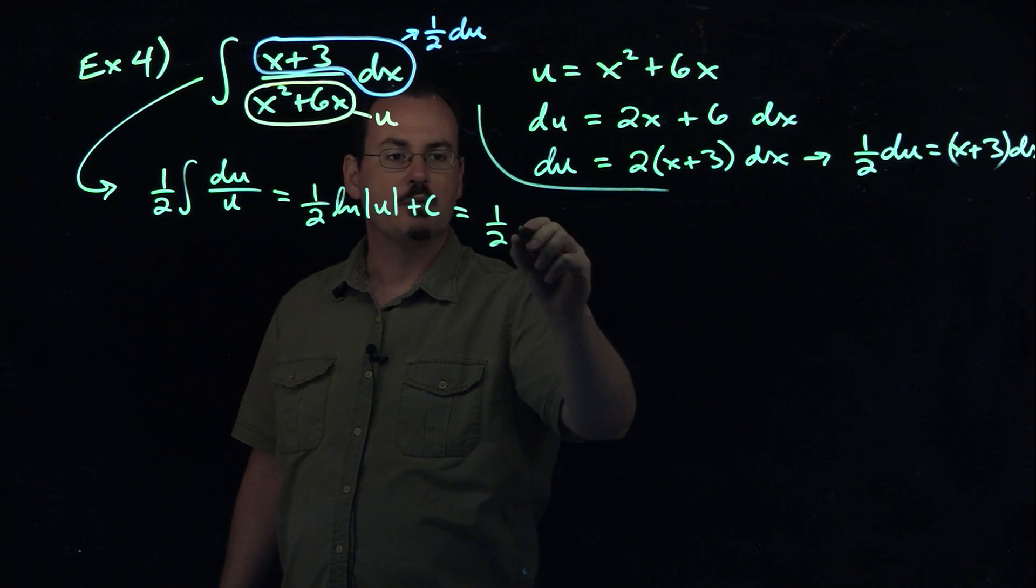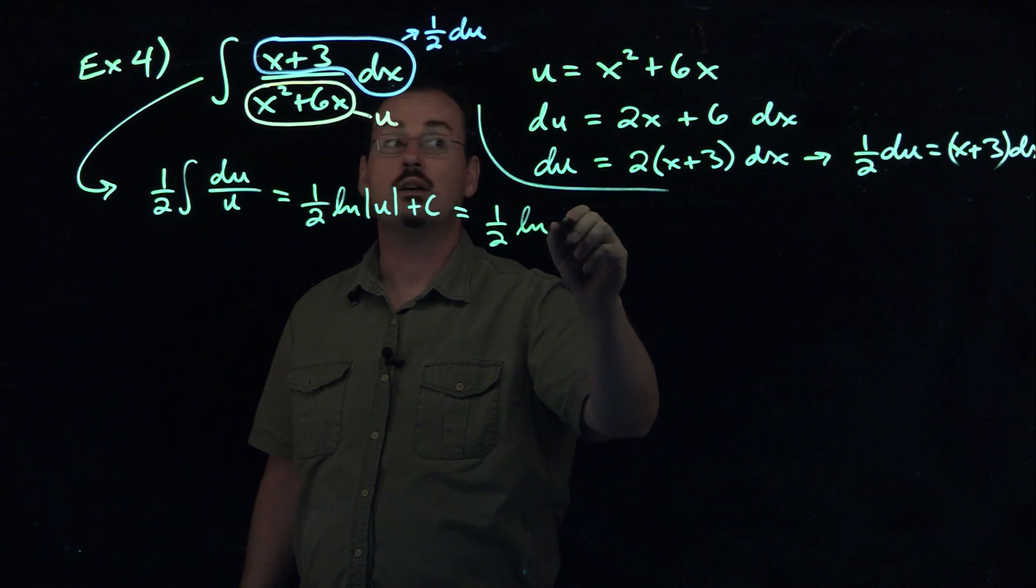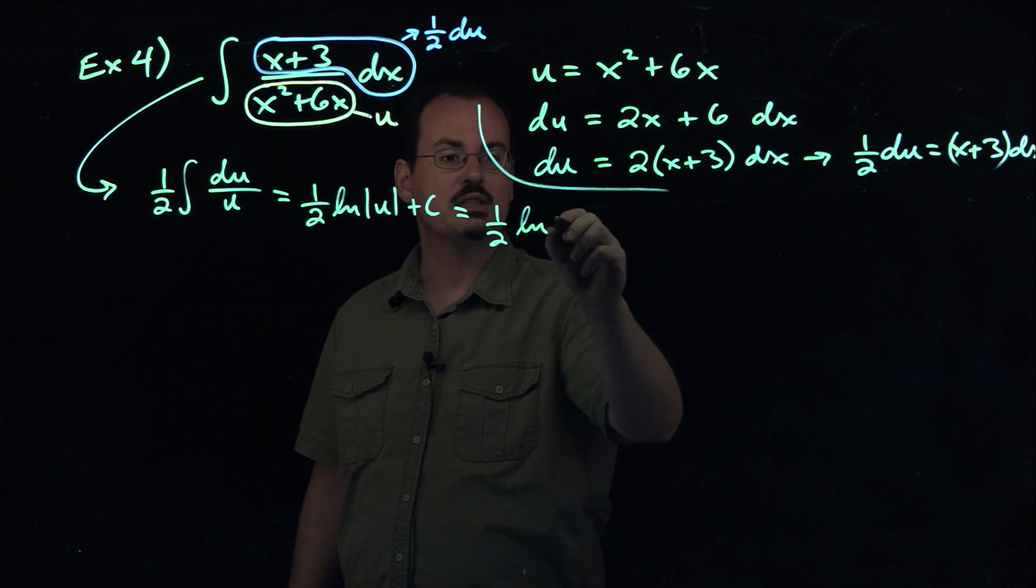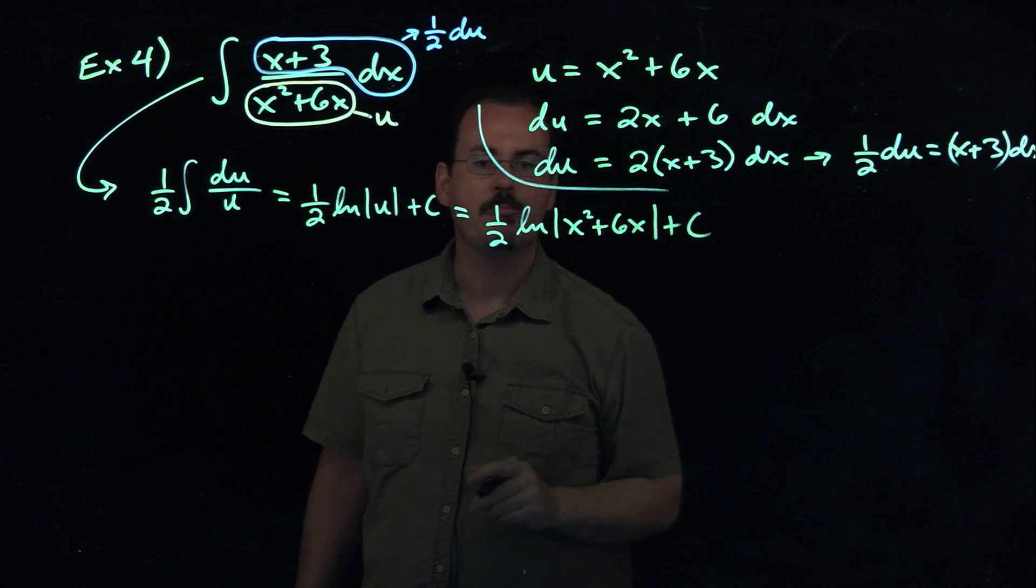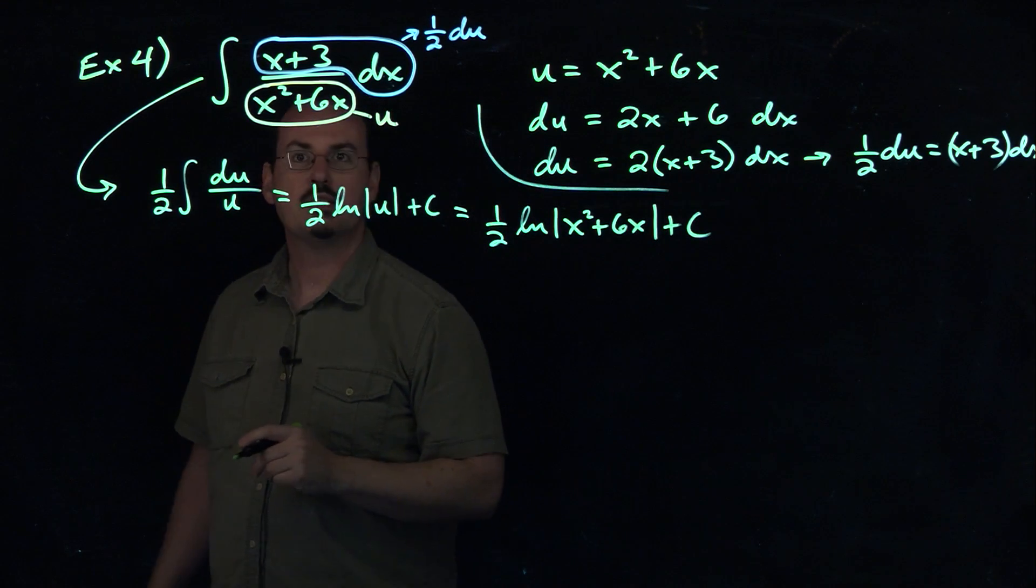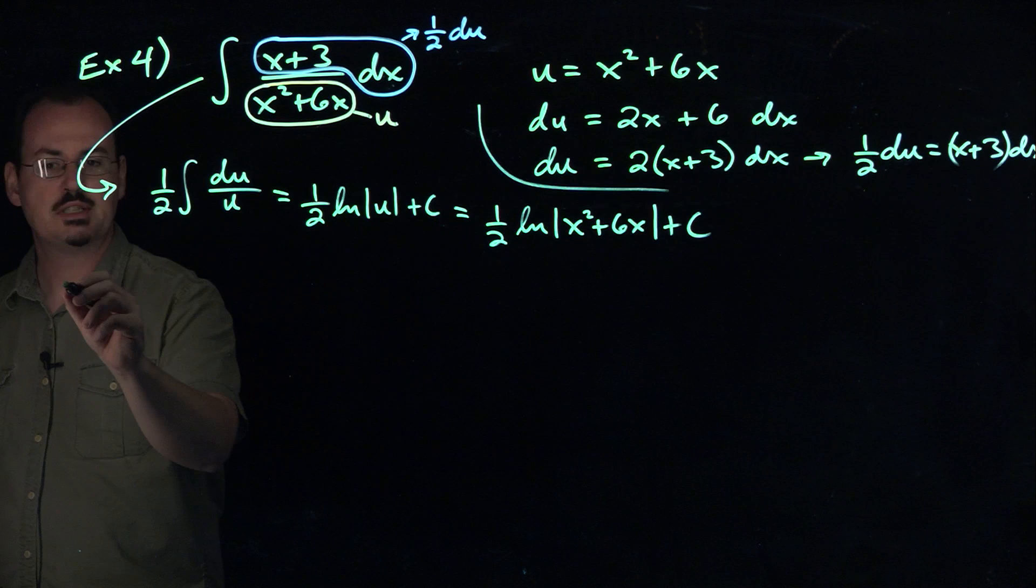That'll be 1/2 natural log of, what did we say u was? x squared plus 6x plus the constant. So we found that antiderivative using substitution. Let's do example 5 now.